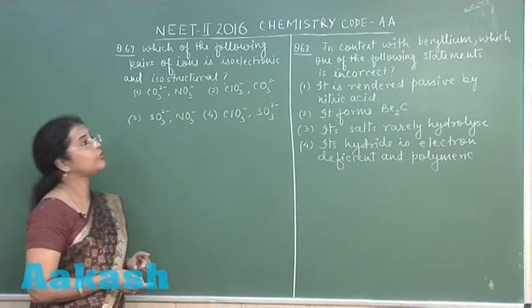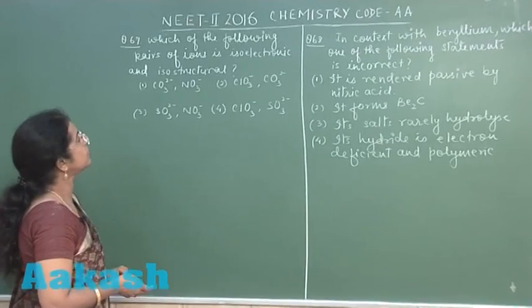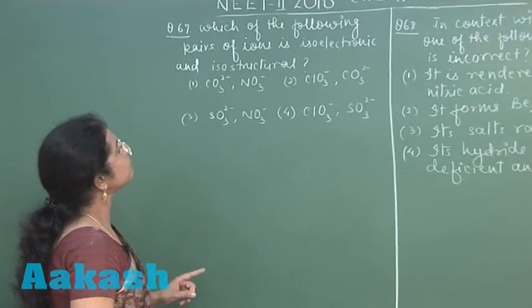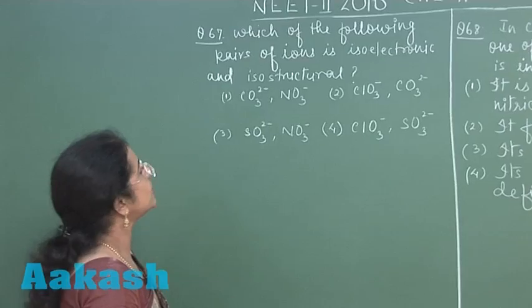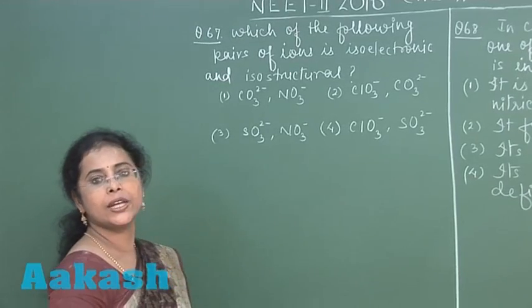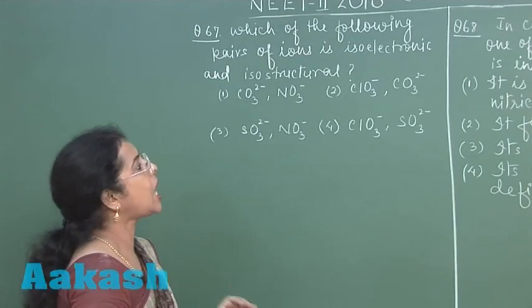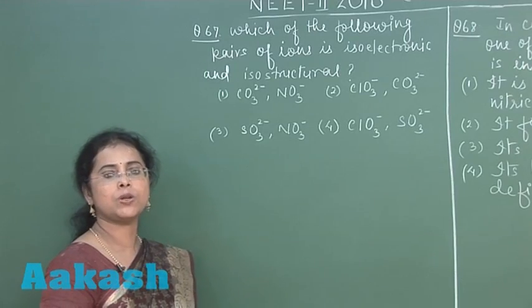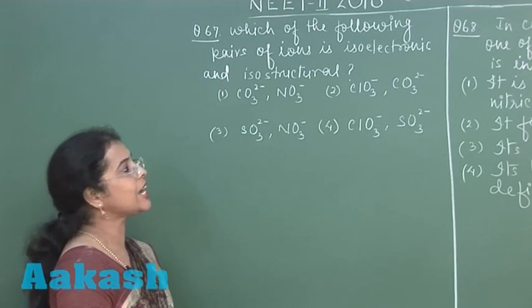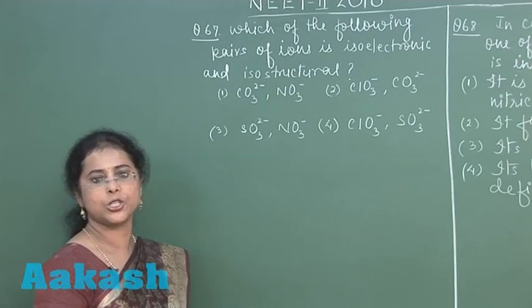Now, let us see the next question of today's paper, question number 67. Which of the following pairs of ions is isoelectronic and isostructural? Isoelectronic means same number of electrons and isostructural means same hybridization.